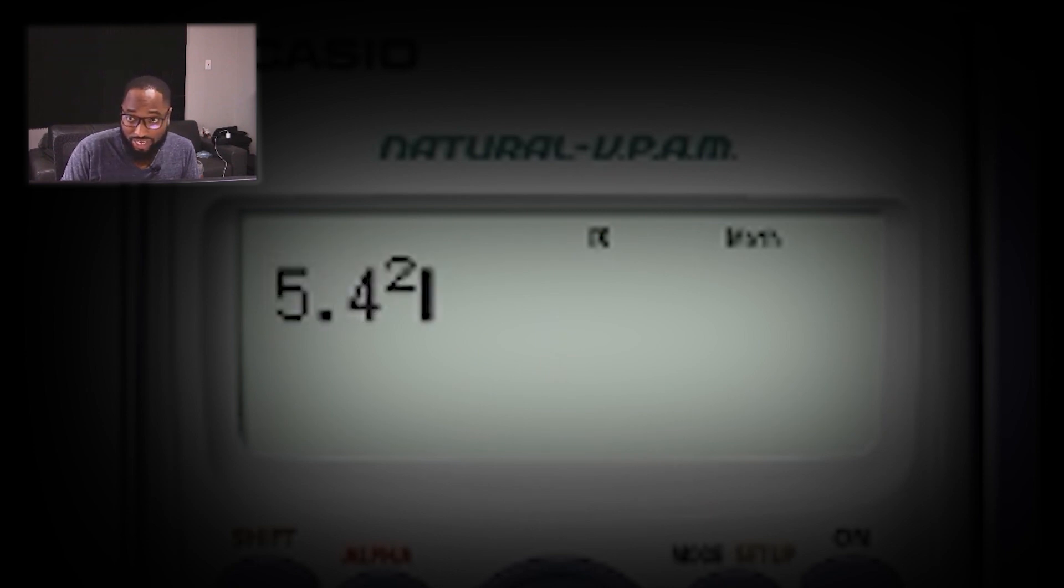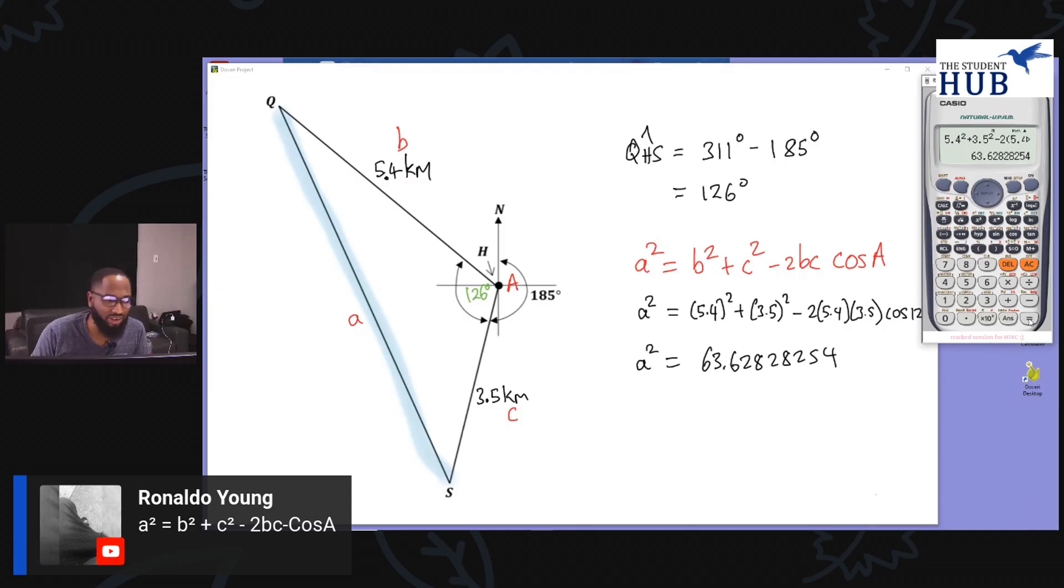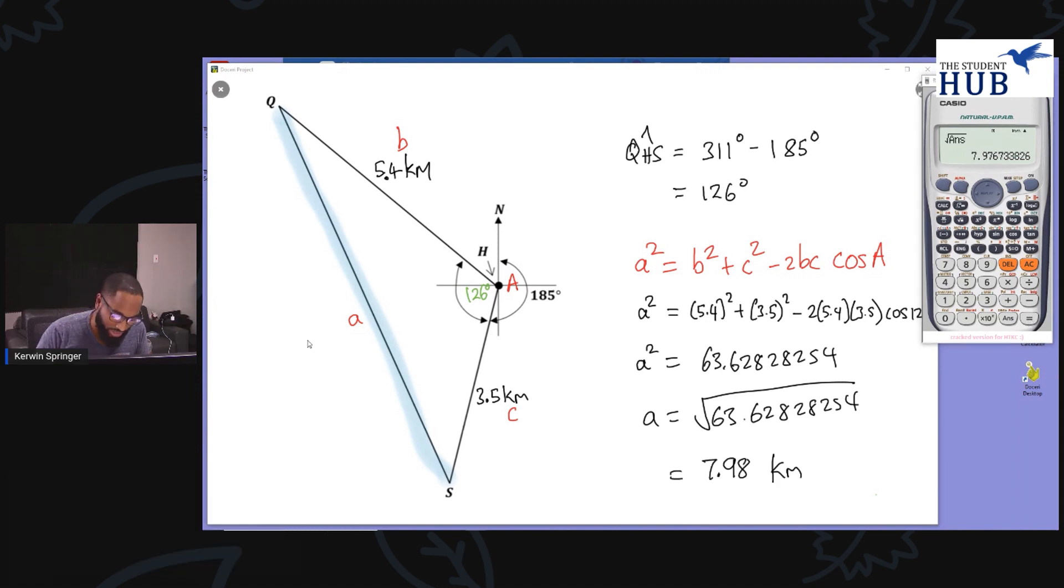I'm getting 63.62828254. I'll write all the numbers. I didn't find the correct answer yet because I still need to find a = √63.62828254. So the square root of that is 7.98.